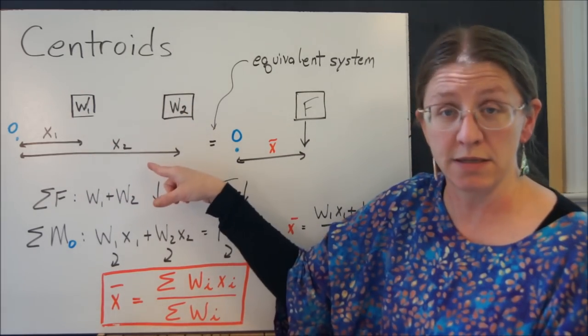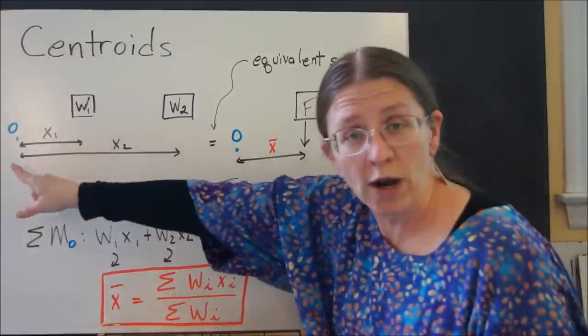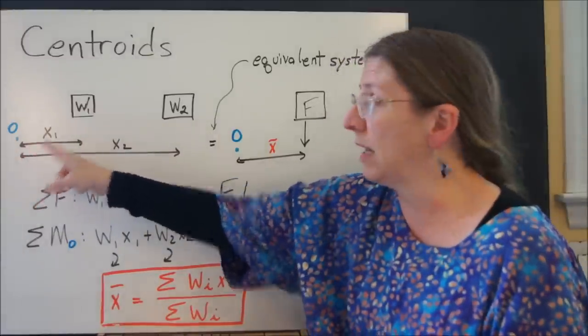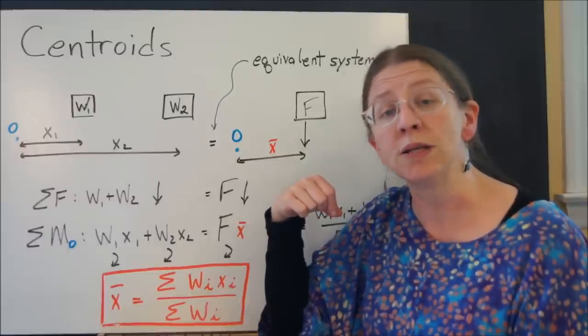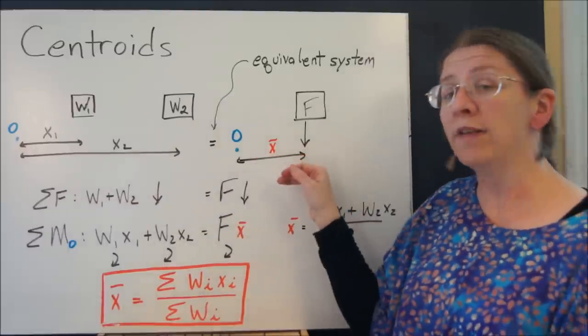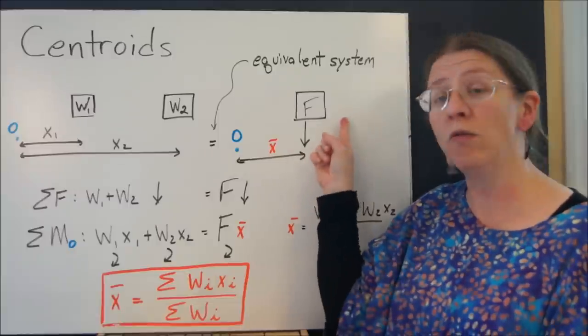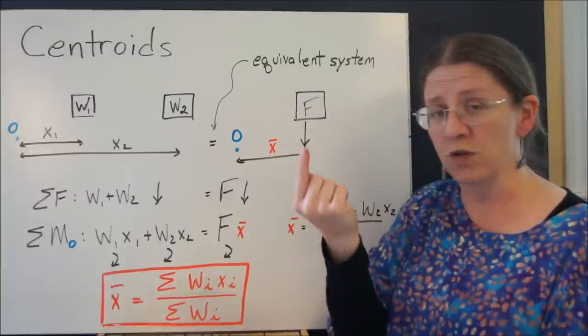I have two weights acting at distance. If I take some random point O over here, then let me call x1 the distance to weight one, and x2 the distance to weight two. I want to make this equivalent to a system where I have only one force, the up force from my finger.